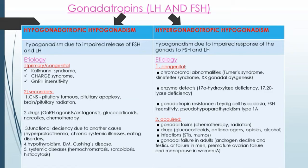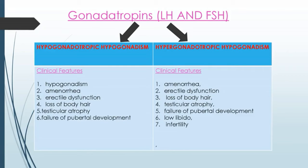Acquired causes include gonadal toxins such as chemotherapy, radiation, drugs including glucocorticoids, antiandrogens, opioids, and alcohol, as well as infections such as sexually transmitted infections, mumps, and gonadal failure in adults.